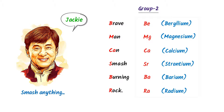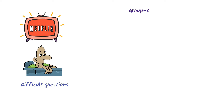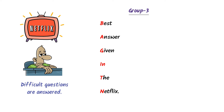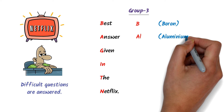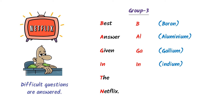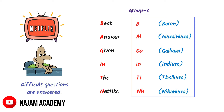Thirdly, consider Netflix. Let you watch a famous series where difficult questions are answered. So I say: best answer given in the Netflix. Here, B stands for Boron, A stands for Aluminium, G stands for Gallium, I stands for Indium, T stands for Thallium, N stands for Nihonium. Thus this is the third group of the periodic table.